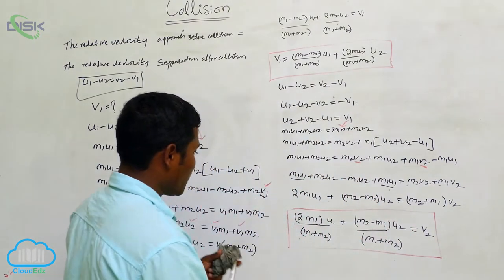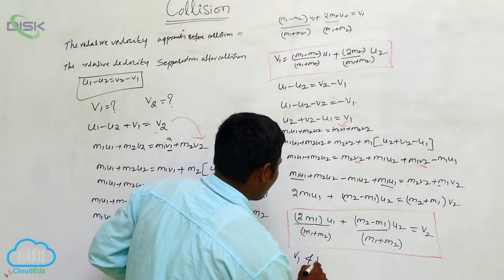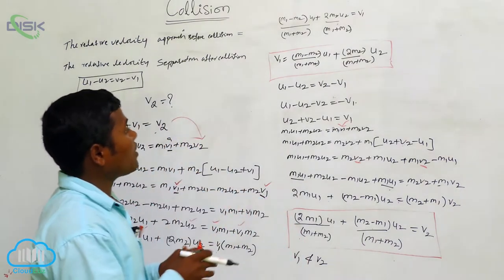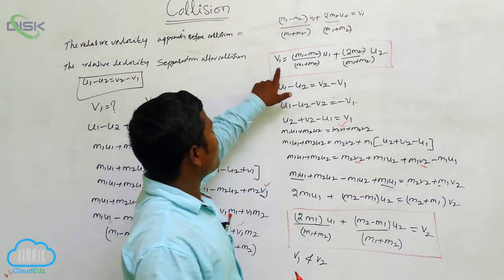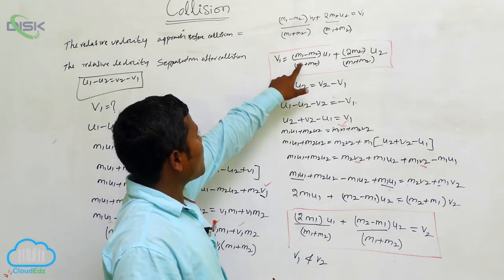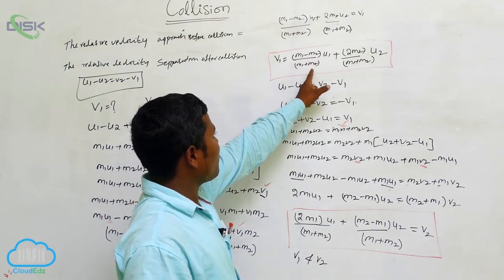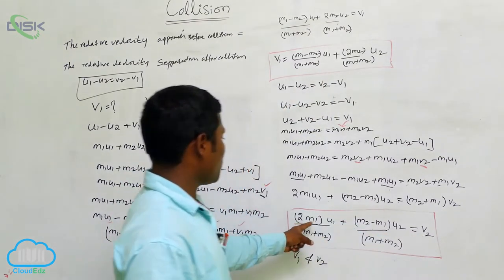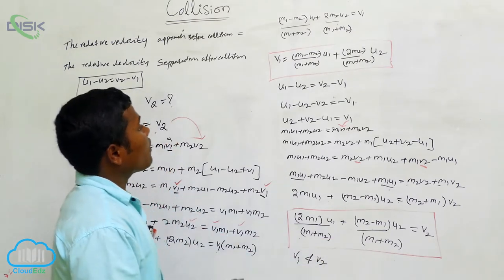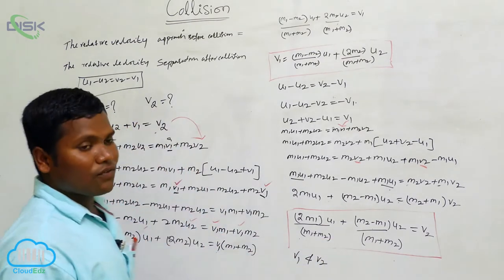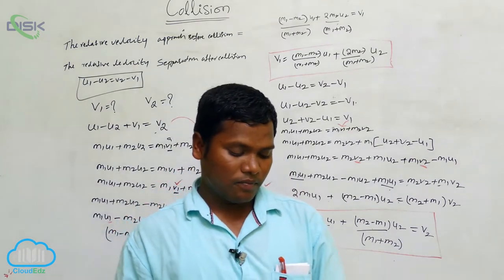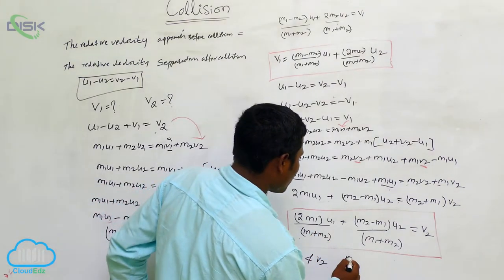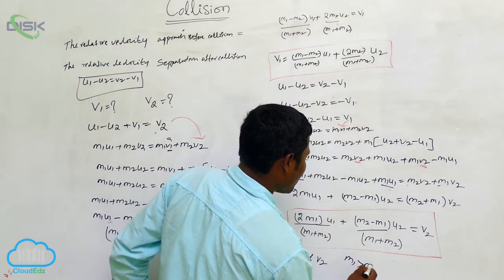So now we have both V1 and V2 values. After the collision, the objects reach these velocities. V1 equals (M1 minus M2) over (M1 plus M2) times U1 plus 2 M2 over (M1 plus M2) times U2. And V2 equals 2 M1 over (M1 plus M2) times U1 plus (M2 minus M1) over (M1 plus M2) times U2. This is for one-dimensional collision.